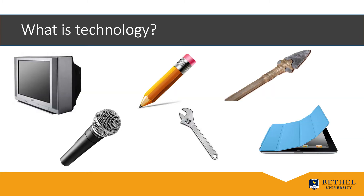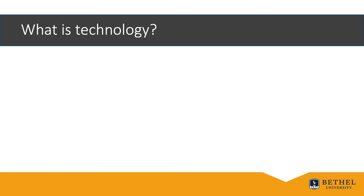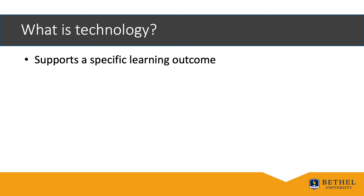In light of our definition, let's return to the examples we looked at before. You can pause the presentation to think about what problems are solved by each of these pieces of technology: a television, a pencil, a spear, a microphone, a wrench, an iPad. The two main goals for integrating technology are that it should support specific learning outcomes and that it is used so seamlessly that it doesn't feel like it's an add-on in your course. We aren't just using technology for its own sake; rather, we are using it because it helps students learn something better than they would have without the technology.